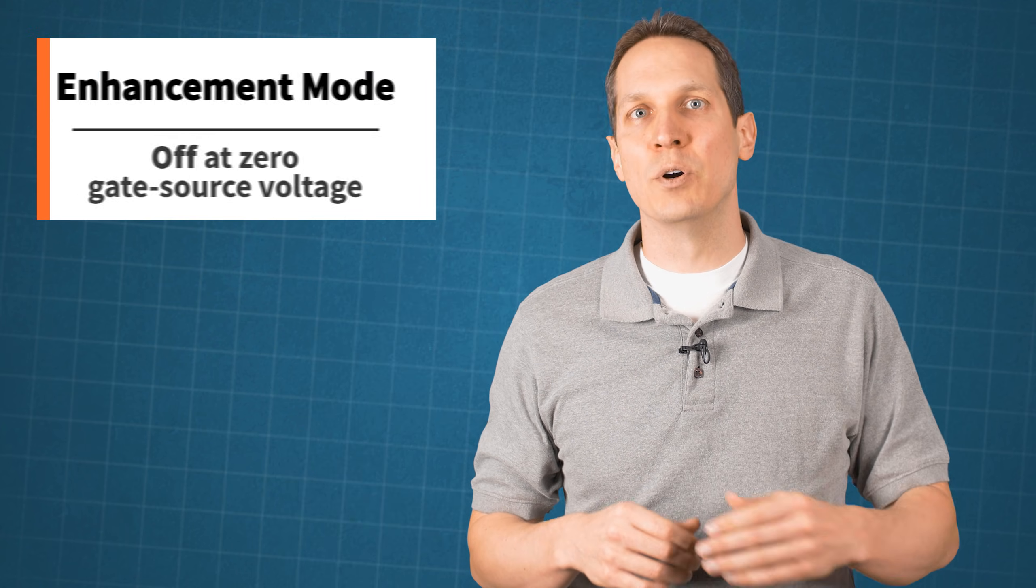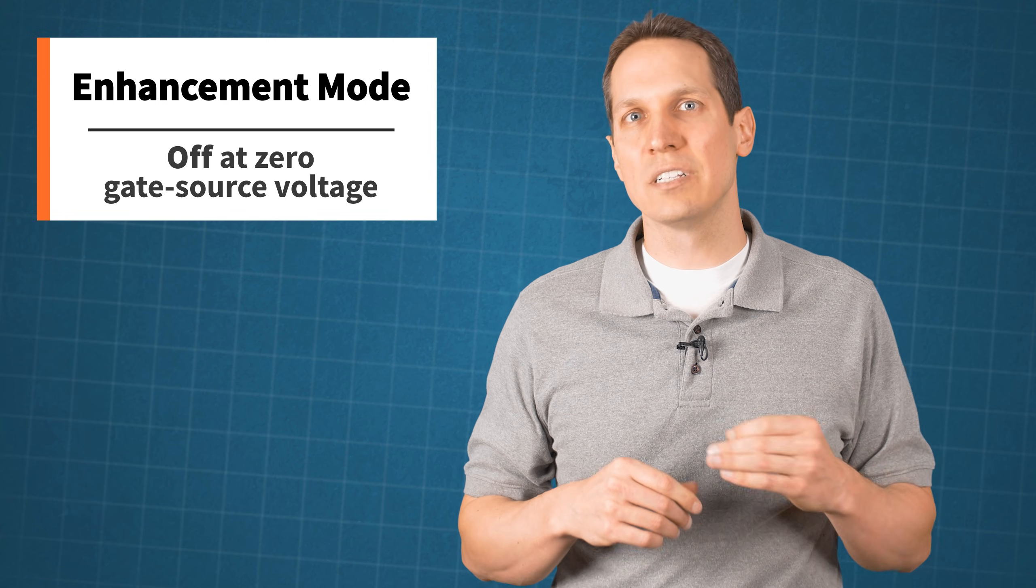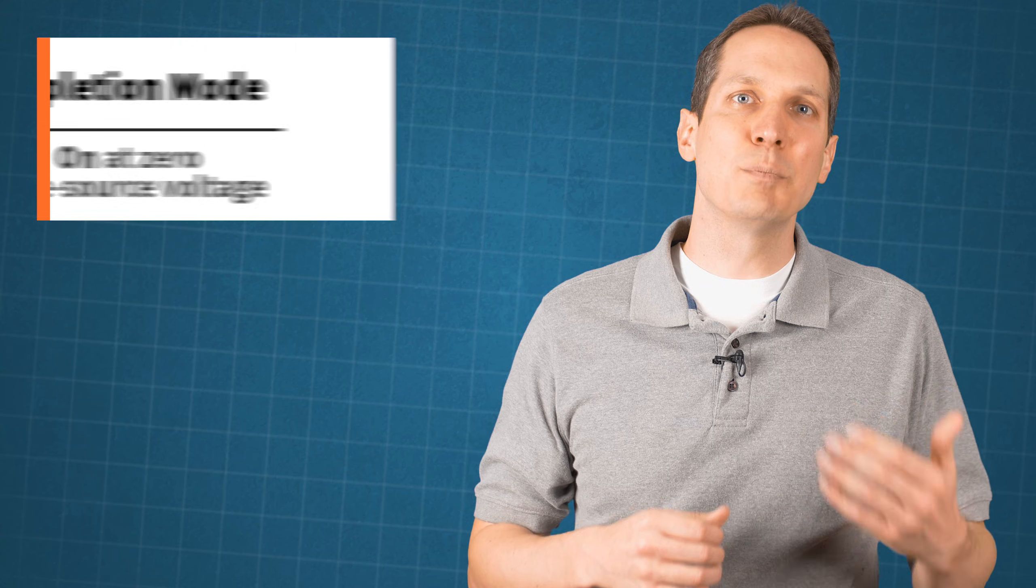Also, I mentioned earlier that this is an example of an enhancement mode device. It's called an enhancement mode device because an increased gate voltage enhances the conductivity of the channel. Some MOSFETs are designed so that they naturally have a conductive channel, and a negative gate voltage is needed to actively turn it off, and these are called depletion mode devices.